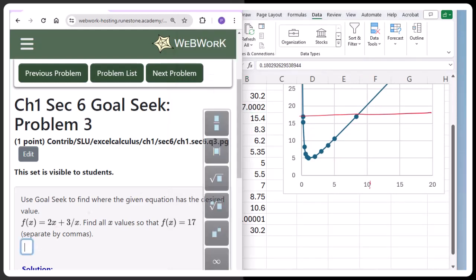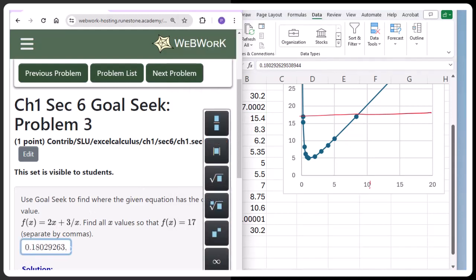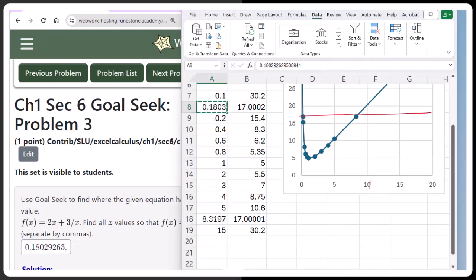So my two values should be 0.1803. Copy that in. Notice you get a lot more digits and then a comma and copy in your second value.